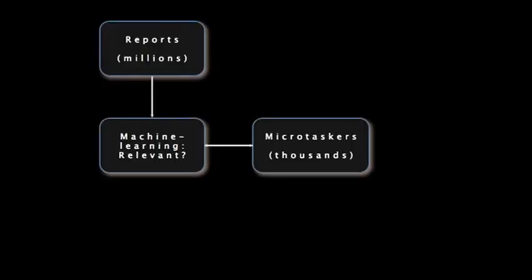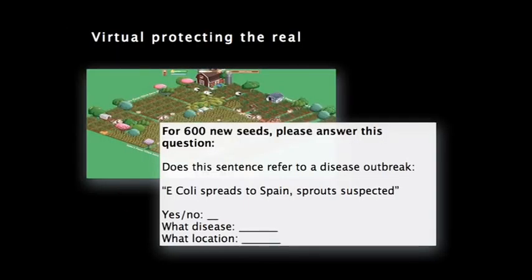If I'd known I was going to be the last talk before dinner, I wouldn't have spoken about deadly food poisoning. We keep our machine learning algorithms updated through micro-tasking. With Amazon Mechanical Turk, you pay people a few cents and they can confirm or deny whether something ambiguous is about an outbreak. But this is my favorite example: people working for virtual currency in online games. To track the agricultural outbreak in Europe, we paid people in Europe virtual seeds in Farmville to confirm whether or not a given report was about an outbreak.